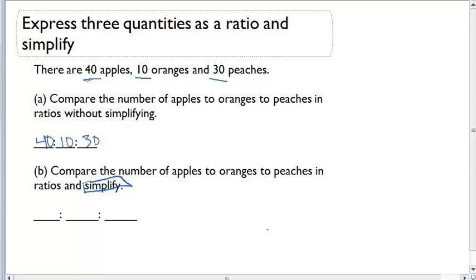When I want to simplify a ratio, I have to ask myself, is there a common factor that can divide evenly into all three of these terms? If I look at 40 to 10 to 30, I can see that each of these numbers is evenly divisible by 10.